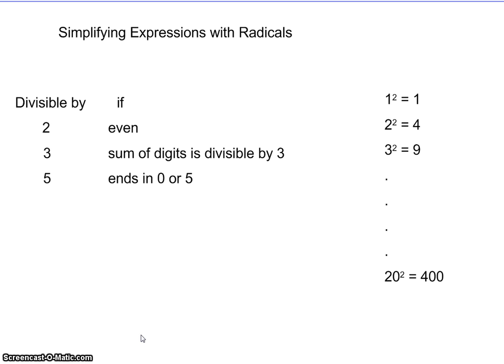A couple things: one, we're going to need to know some divisibility rules. I generally go with these three. If a number is even, I can take a two out of it. If I have a number that ends in five or zero, I know I can take five out of it. Divisible by three if the sum—so that's addition—if I add up all my digits and that's divisible by three.